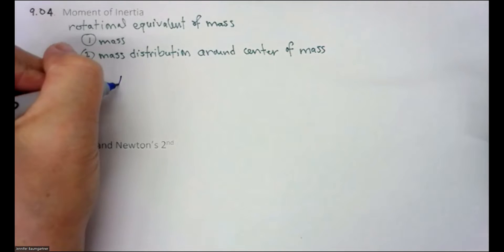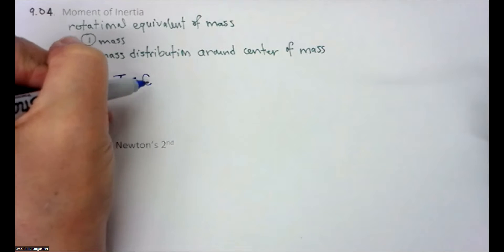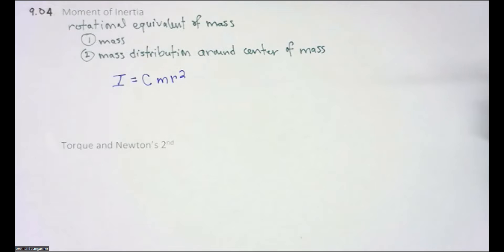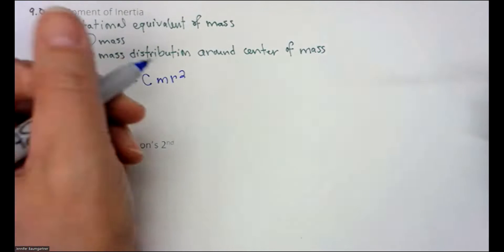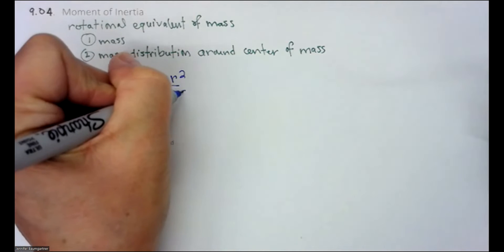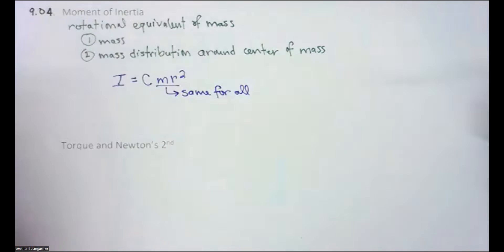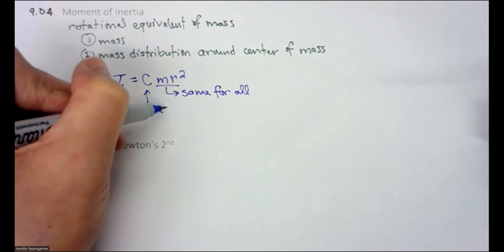We represent moment of inertia with an italics I. So our symbol is the I. And the formula is we have a constant times the mass times the radius squared. So this is going to be the same. This part's the same for a sphere, for a hollow disc. So this is the same for all.